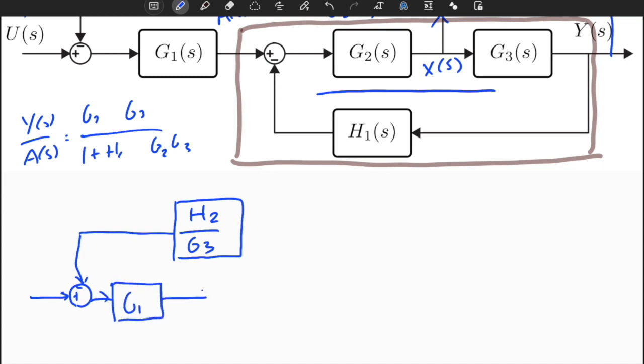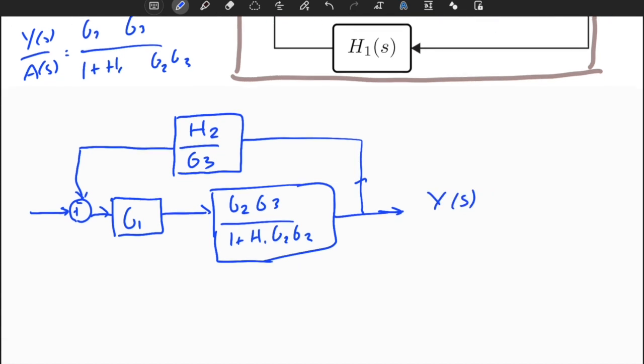And now this is equal to G2 G3 over 1 plus H1 G2 G3. As you can see, we have a much simpler block diagram structure. So it was relatively easy, right?